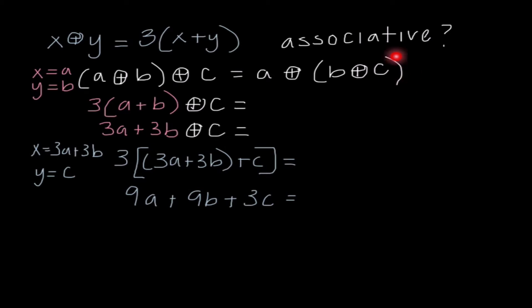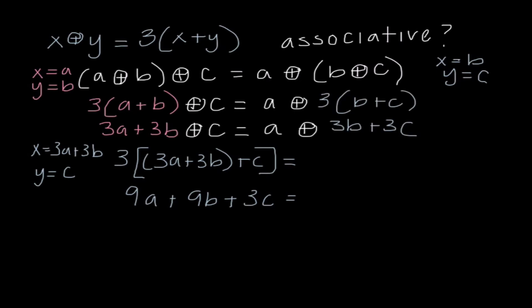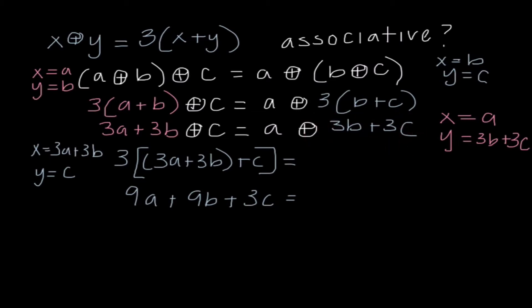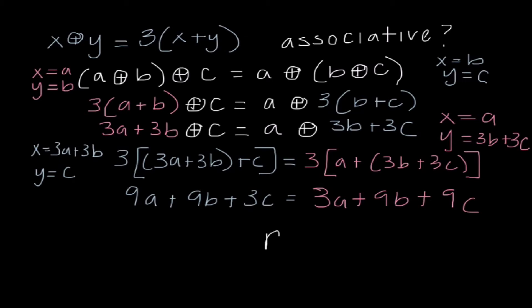Moving to the right side, starting in the parentheses: b circle plus c gives 3 times the quantity b plus c. The remaining circle plus has a as x and the entire expression 3b plus 3c as y, giving 3 times the quantity a plus 3 times the quantity b plus c, which distributes to 3a plus 9b plus 9c. Those two expressions are not equal to each other, so we say no, it is not associative.